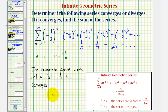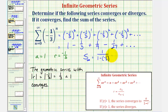Therefore, the sum of the series will be equal to a divided by the quantity one minus r. Our infinite sum is equal to a, which is one, divided by one minus r, where r is negative one-third. This gives us one divided by four-thirds. Dividing by four-thirds is equivalent to multiplying by the reciprocal, three-fourths. So this equals one times three-fourths, which equals three-fourths. The series converges to three-fourths.